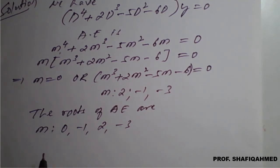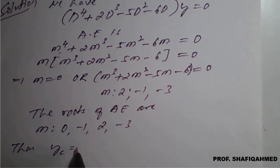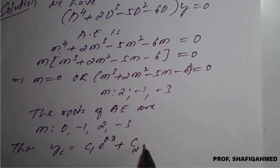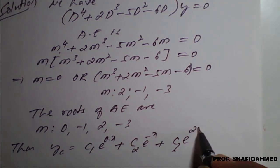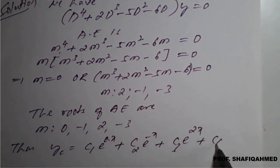With the help of this we will write the complementary function. Thus yc equals c₁e^(0x) + c₂e^(-x) + c₃e^(2x) + c₄e^(-3x). This is the complementary function.